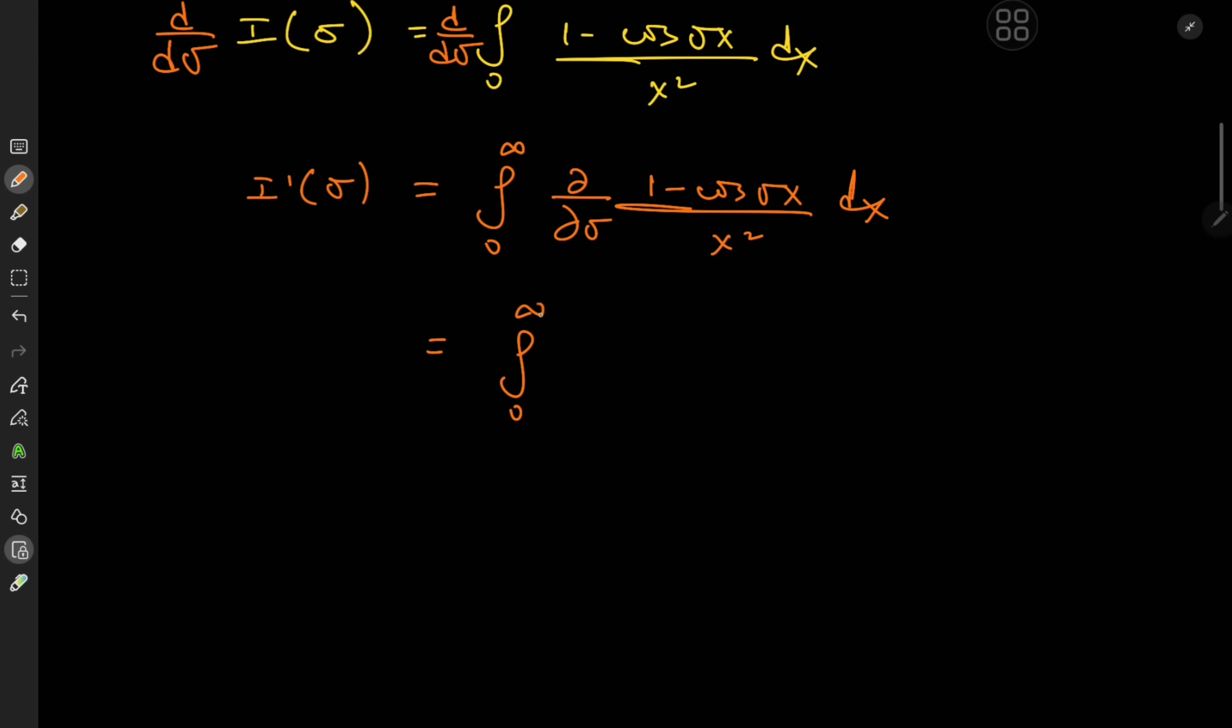So we have i prime on the left hand side and on the right we have the integral from zero to infinity of the partial derivative with respect to sigma of 1 minus cosine sigma x over x squared dx. Differentiating gives us integral zero to infinity, 1 over x squared, the derivative of negative cosine is sine so we have sine of sigma x and by the chain rule we have this x outside as well. Lovely cancellation taking place.